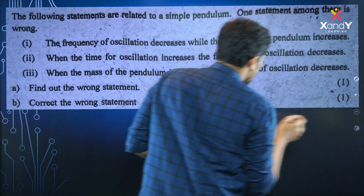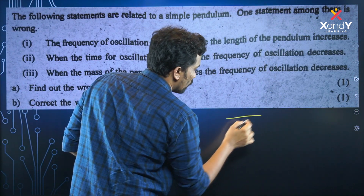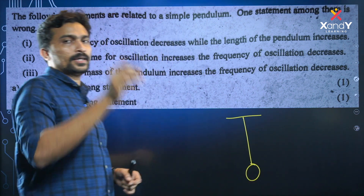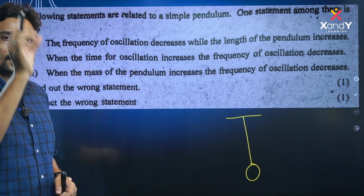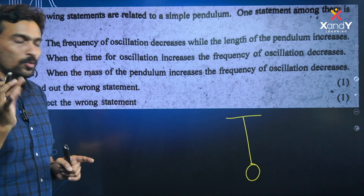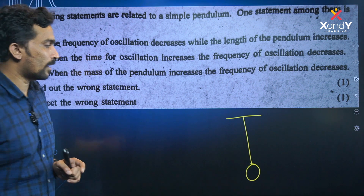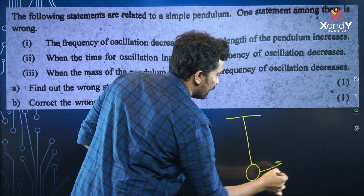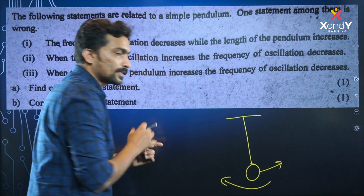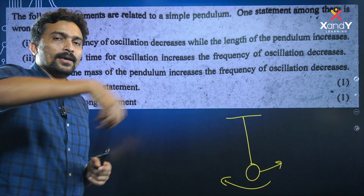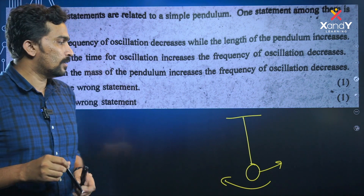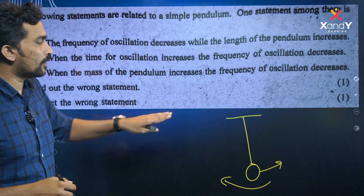When you learn the pendulum, we use a string and a piece of metal. If we put it to one side, it oscillates in two directions — it can oscillate. This is what we call the pendulum.